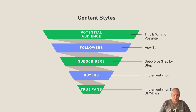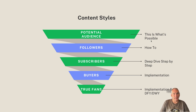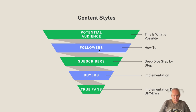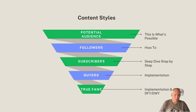Let's have a closer look at the type of content you're going to publish. For your potential audience, you're going to publish 'this is what's possible' content — how I did this, my biggest money maker ever, that type of thing. For followers, to get people from a potential audience to followers, you're going to publish how-to articles — this is how you do this, this is how you do that.